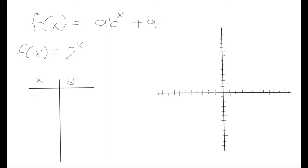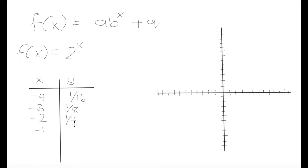Let's find some different values for x and see what we get for y. If x = -4, then y = 2^(-4) = 1/16. If x = -3, y = 1/8. If x = -2, y = 2^(-2) = 1/4. If x = -1, y = 1/2. If x = 0, y = 1. If x = 1, y = 2. And when x = 2, y = 4.